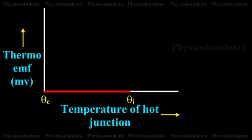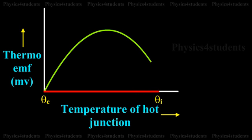For small difference in temperature between the junctions, the graph is a straight line. For large difference in temperature, the graph is a parabola.